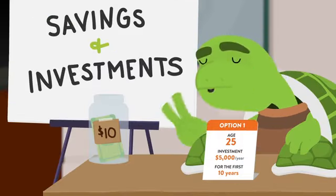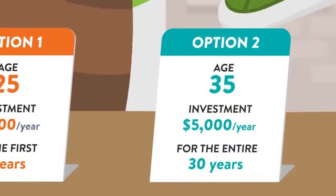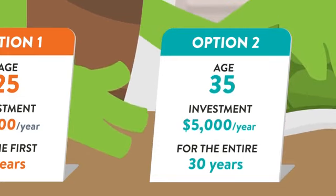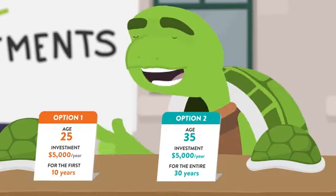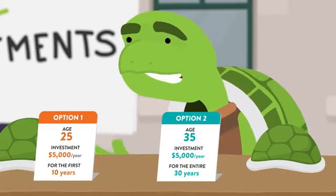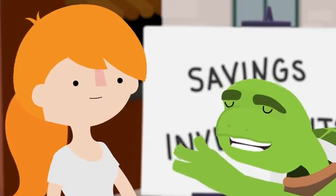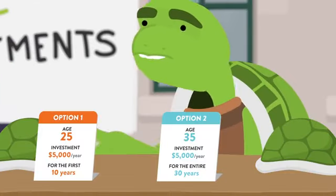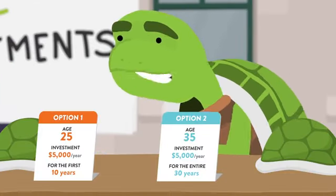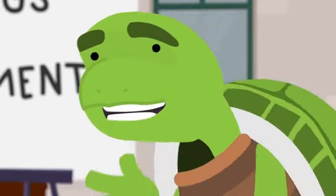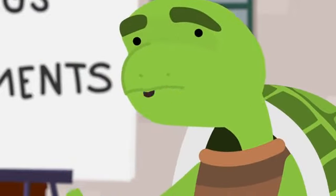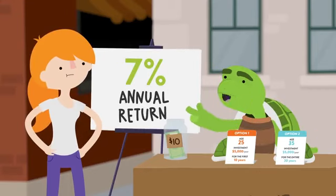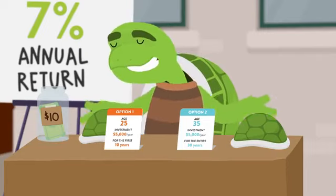Option two: you're 35 years old. Again, you put away five grand every year, but this time you keep doing that for 30 years. By then you're 65, and you check to see how much it's worth. Let's say in both cases your total investment is getting an average 7% annual return. Make your choice.